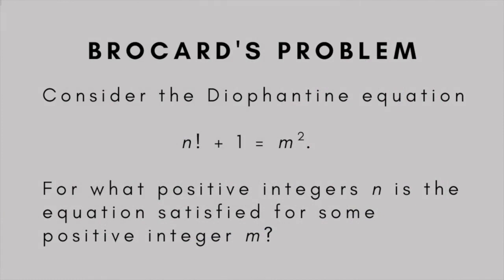In 1876, he became the first to state a problem in number theory, which now also bears his name, Brocard's problem.